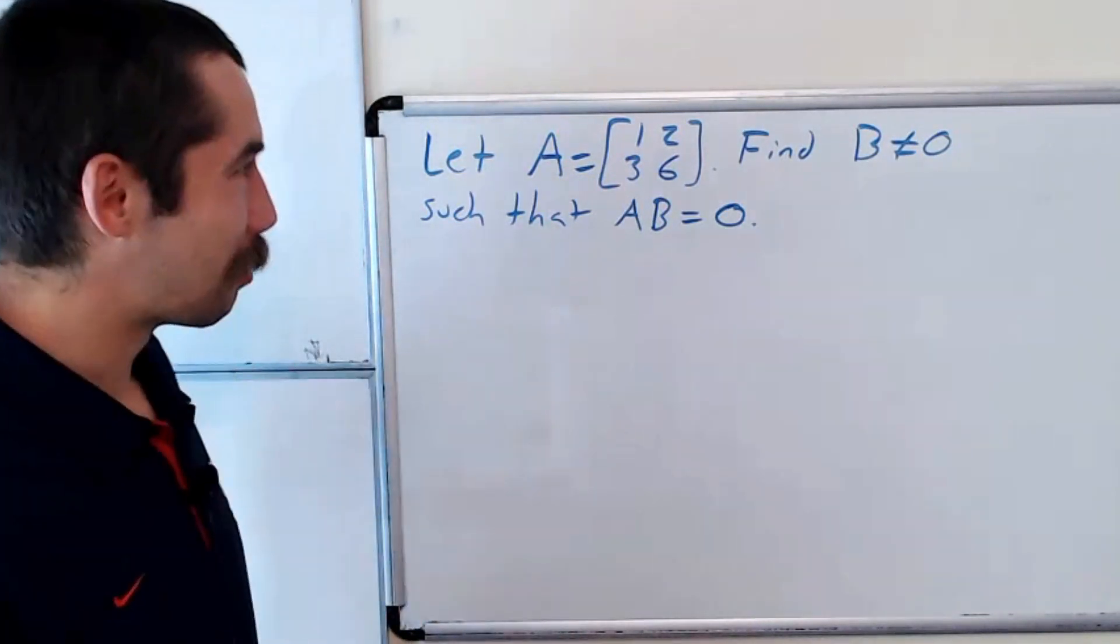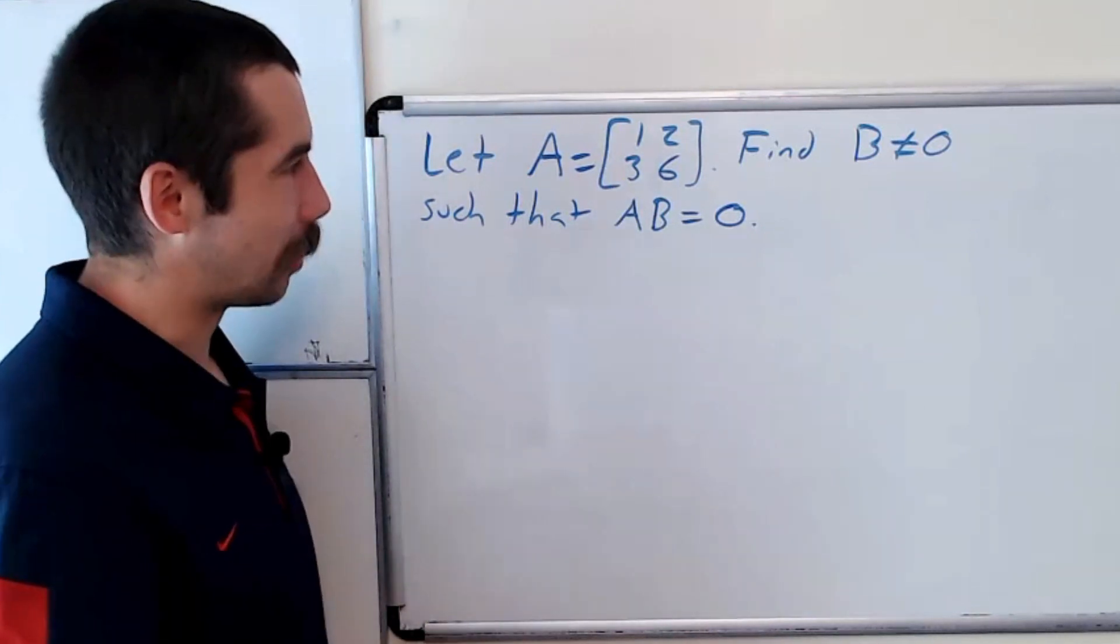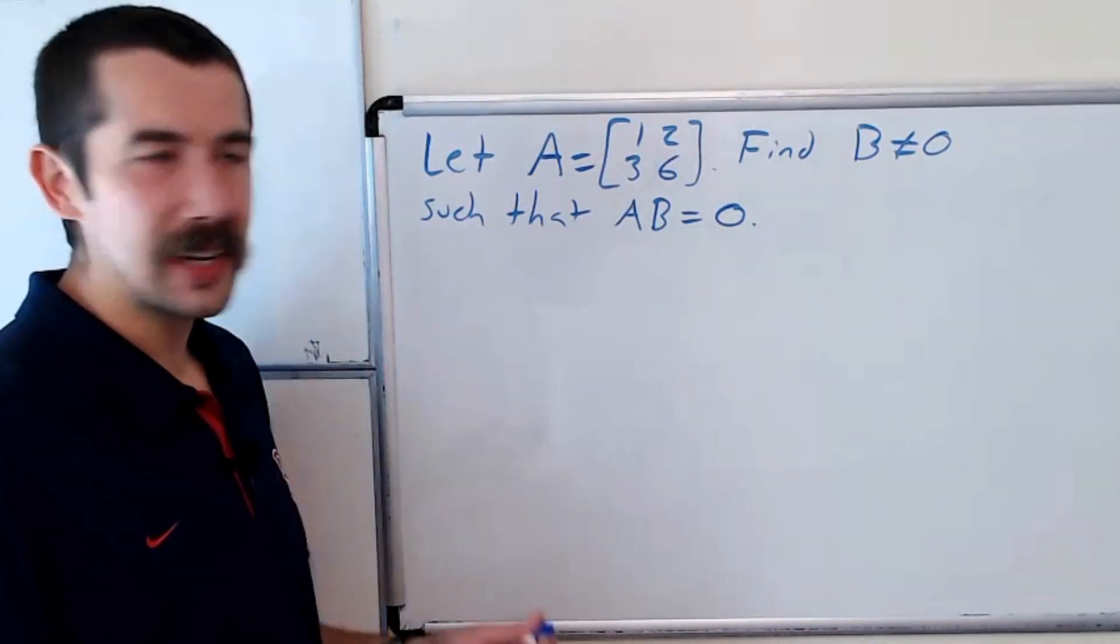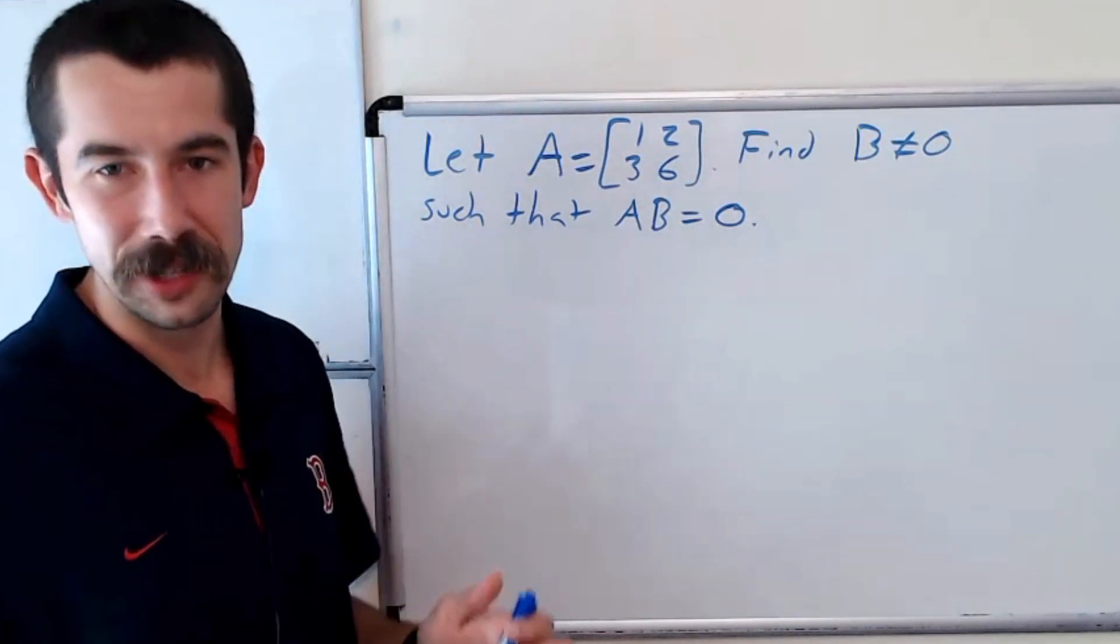Happy learning! Today we're going to work through the following problem. Let A be the matrix [1, 2; 3, 6]. We want to find a non-zero matrix B such that A times B is equal to the all-zeros matrix.